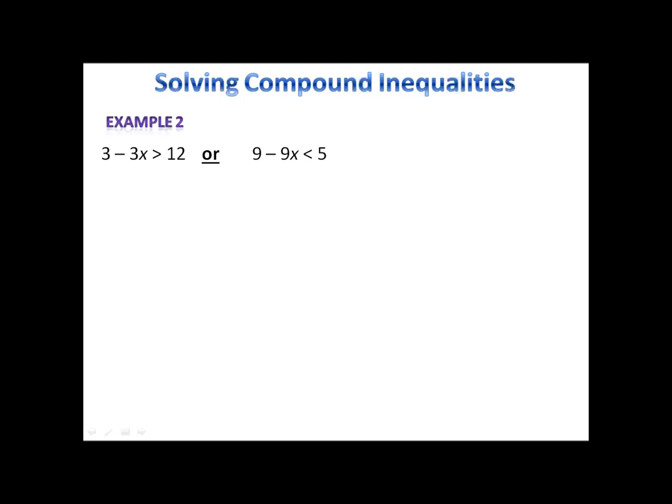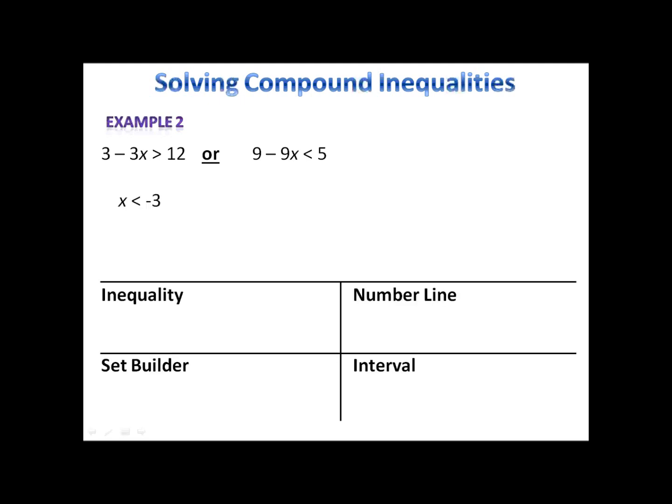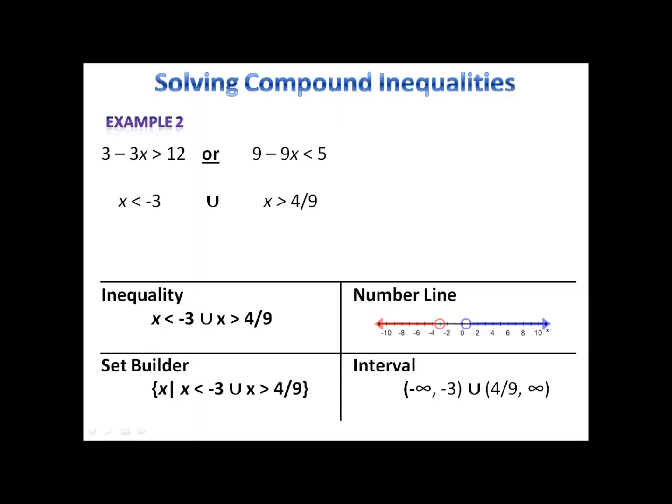Let's take a look. On the first one, we have x is less than negative 3. Union — on the second one, we have x is greater than 4 over 9. Once you have that, you can go ahead and write the set using the different notations. For the inequality, we have x less than negative 3, union x greater than 4 ninths. We took that inequality and put it into the set builder package. The number line goes from negative infinity up to negative 3, and from 4 ninths up to positive infinity. The interval shows us that same exact set using interval notation.